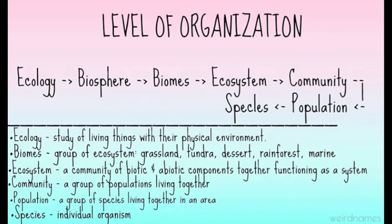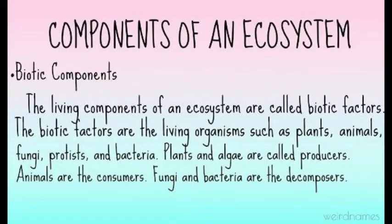The species is an individual organism. The living components of an ecosystem are called biotic factors. The biotic factors are the living organisms such as plants, animals, fungi, protozoa, and bacteria. Plants and algae are called producers, animals are the consumers, while fungi and bacteria are the decomposers.